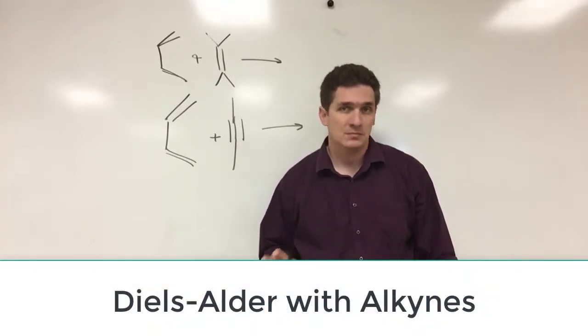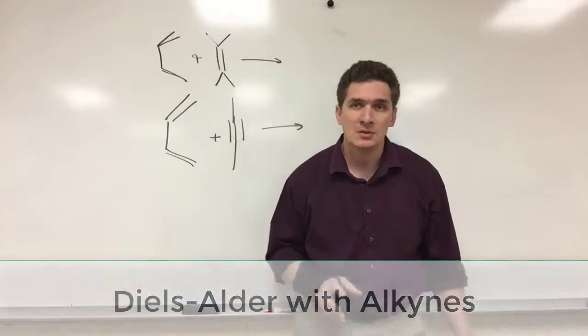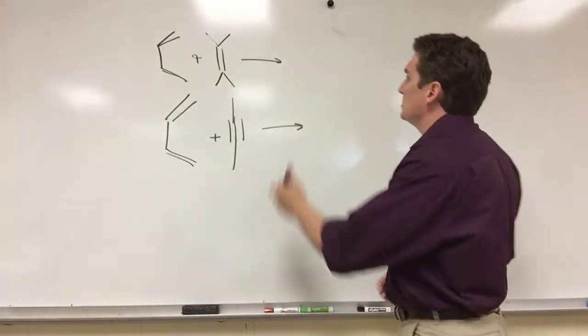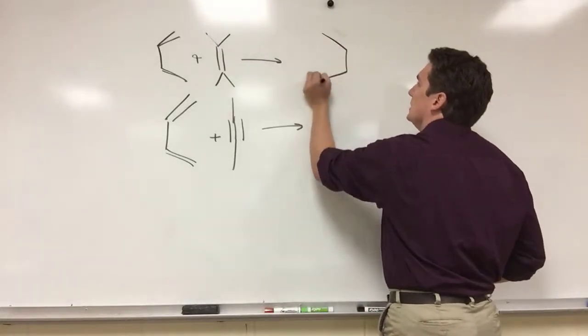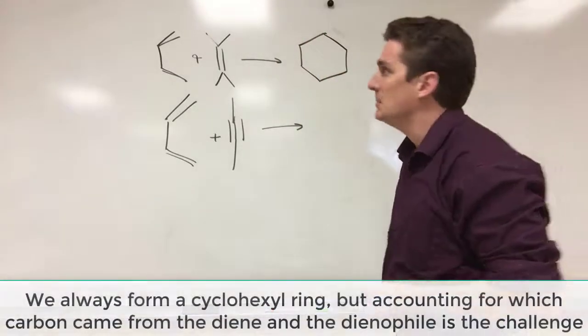Now Diels-Alder occurs, go back to the video we talked about Diels-Alder. We always want to end up forming a six-member ring when we do Diels-Alder. And I told you the best way to do this is to go about number your carbons.